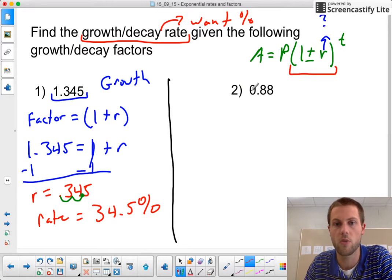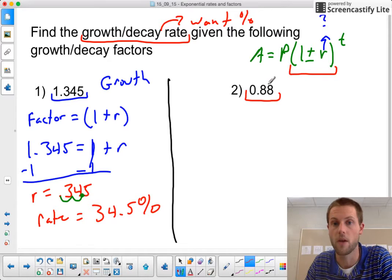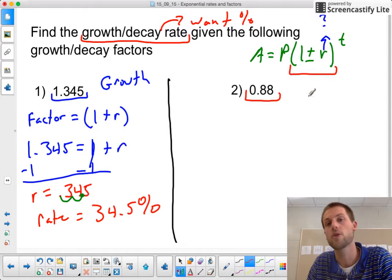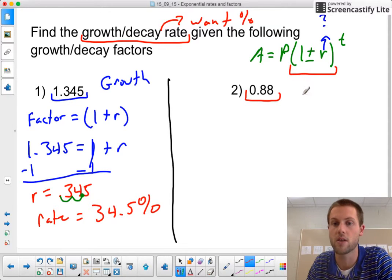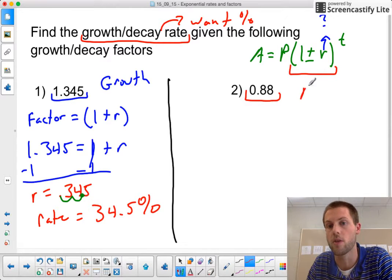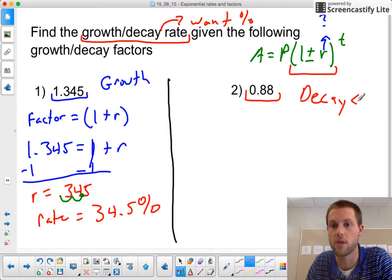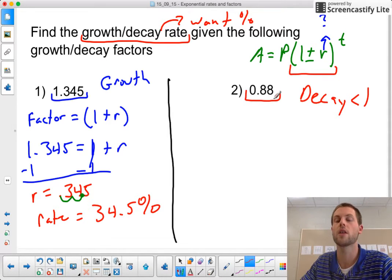For this last one here, we're going to start off with what looks like a decay factor of 0.88. Now the reason I knew that so fast is because if I am less than 1, then I am going to be looking at a decay factor because my factor is less than 1.